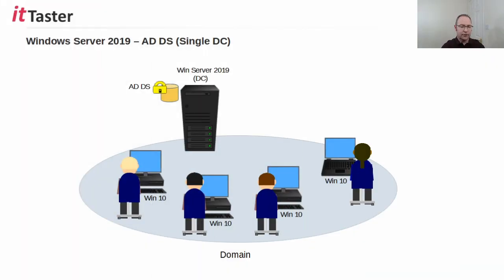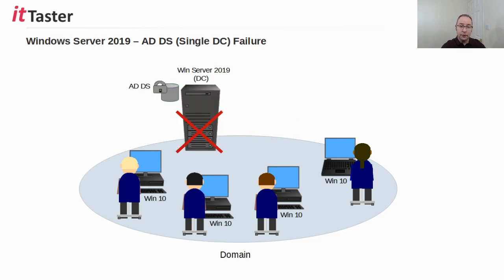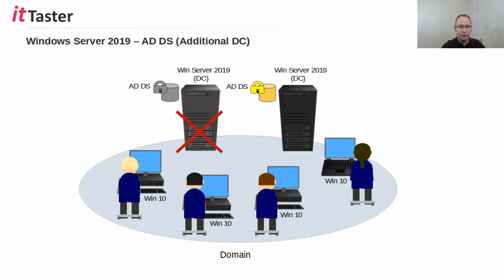One big advantage of a client-server network is centralized management. In a Windows Server network, this is provided by domain controllers — DCs that are configured to run the Active Directory Domain Services role. Domain controllers perform a number of important functions including dealing with logins and authenticating network users. But having a single domain controller is a single point of failure — if it fails, we're no longer able to authenticate users or access important network resources.